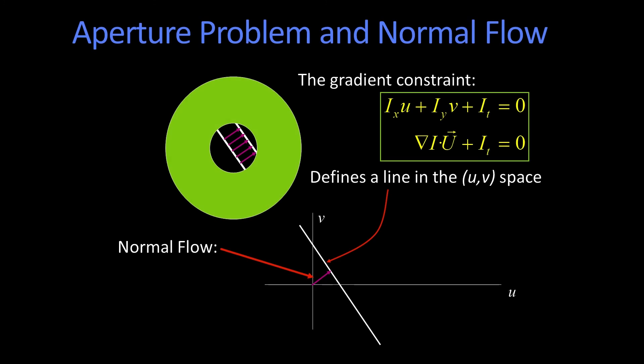So you remember the aperture problem, right? And so here it's drawn out that the idea is if I have a gradient in some direction, and so this is my little gradient there, any UV that's along this line would be an acceptable UV. That is, any UV whose component in the direction of the gradient would be acceptable. And that's what this says, that there's a single equation for that. And that's the equation of a line in UV space.